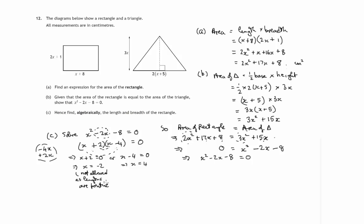So if we used x equals negative 2, we get a negative length or breadth for this rectangle. So let's use x equals 4.